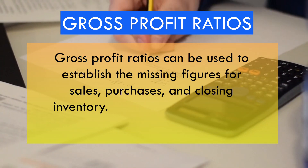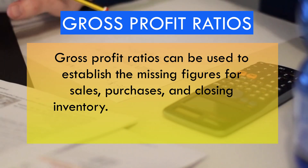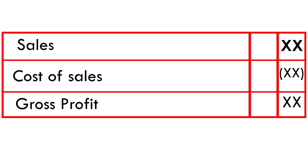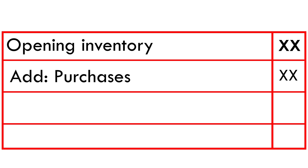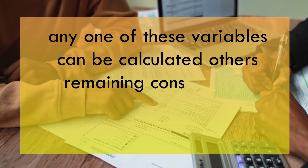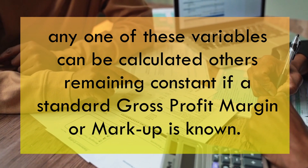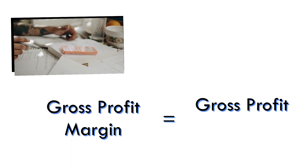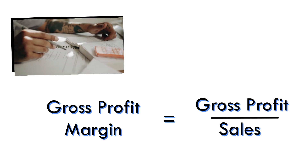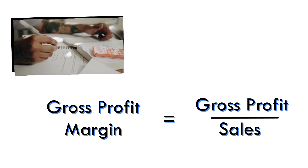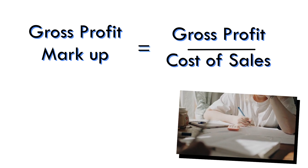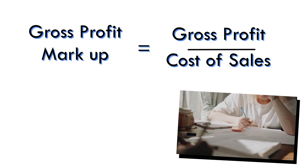The third method to use is gross profit ratios. Gross profit ratios can be used to establish missing figures for sales, purchases, and closing inventory. Remember, gross profit is the difference between sales and cost of sales — this is what we refer to as the trading account. Cost of sales can be computed by taking opening inventory, adding purchases, and deducting closing inventory. One of these variables can be calculated with others remaining constant if a standard gross profit margin or markup is known. Gross profit margin equals gross profit divided by sales — margin is gross profit expressed as a percentage of sales. Gross profit markup equals gross profit over cost of sales — markup is gross profit expressed as a percentage of cost of sales.